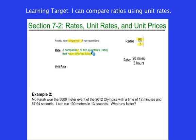So a rate is when I have two different labels that I'm comparing. For instance, if I take the comparison 90 miles to 3 hours, that tells me a distance that I traveled in a certain amount of time. So that's a comparison that tells me how fast I went.